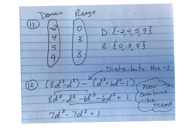On number 11, you're supposed to get a domain and range. If you see here, your x's are your domain, your y's are your range, and you have to put them in order from least to greatest. So put them in your brackets: negative 2, 4, 5, and 9 for domain; 0, 3, and 8 for range.